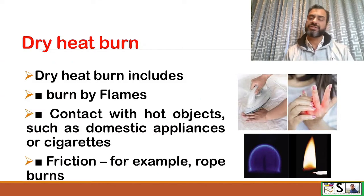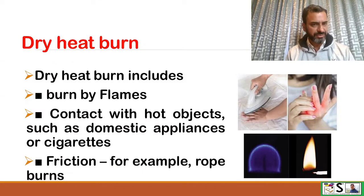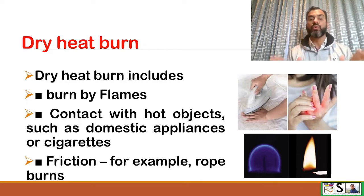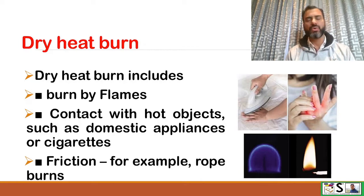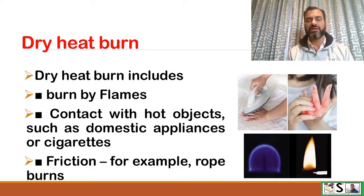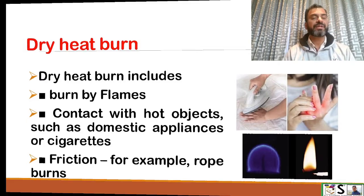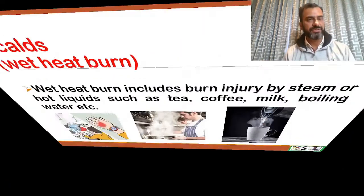What is dry heat? Dry heat burn includes burn by flames or contact with hot objects such as domestic appliances or cigarettes, and friction — for example, rope burn. So these all types of burns are dry heat burns.